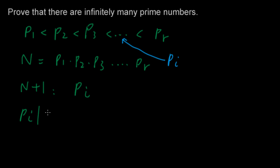P I is a factor of N plus 1. Since every prime number is a factor of N, P I is also a factor of N. Now if P I is a factor of both N plus 1 and N, then it has to be a factor of N plus 1 minus N.